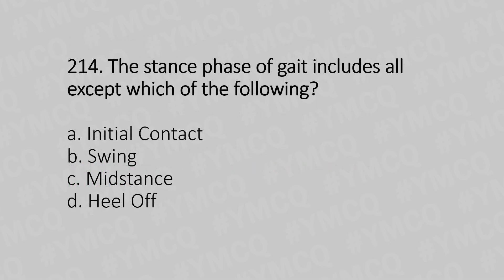Question 214: The stance phase of the gait cycle includes all except which of the following? Option A: Initial contact. Option B: Swing. Option C: Mid stance. Option D: Heel off. The answer is Option B: Swing.